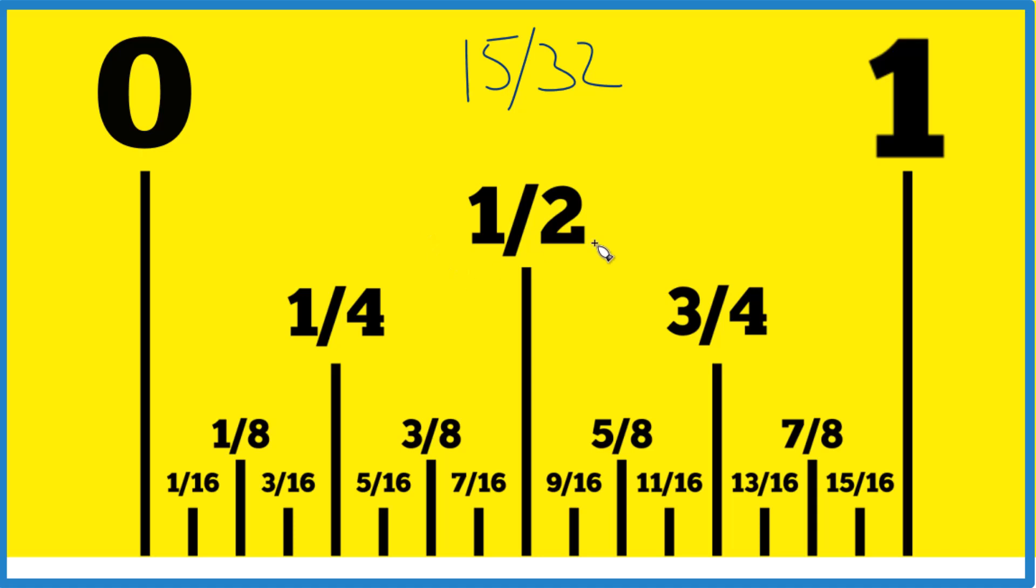And the way to do this is to look at one inch, cut it in half. So that's half an inch. Cut that in half. That gives you a quarter inch. Cut it in half. You get an eighth. Again, a 16th.